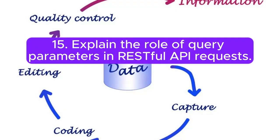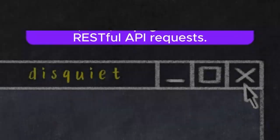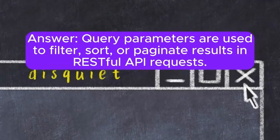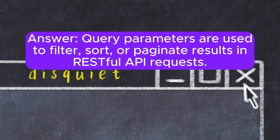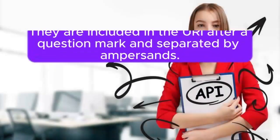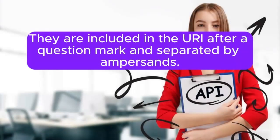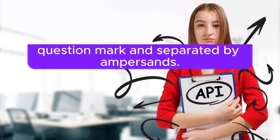Question 15: Explain the role of query parameters in RESTful API requests. Query parameters are used to filter, sort, or paginate results in RESTful API requests. They are included in the URI after a question mark and separated by ampersands.